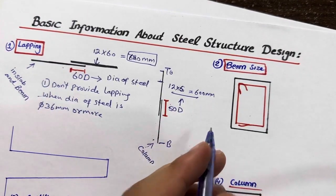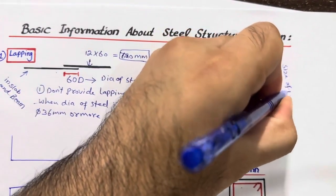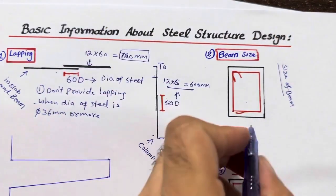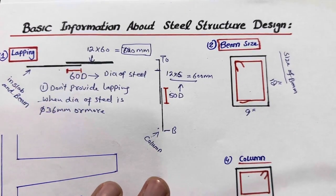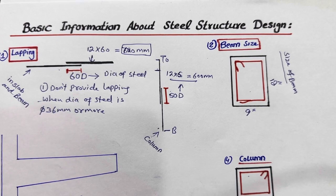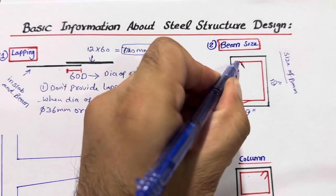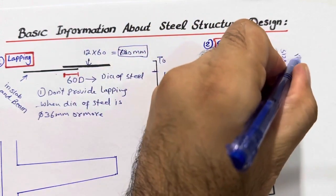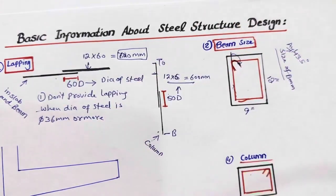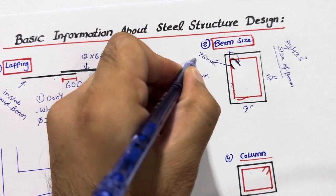The second topic is beam size. For a normal residential building of G+1 storey — ground floor and first floor — the minimum beam size should not be less than 9 inches by 12 inches. This is the minimum size for plinth beam or floor beam. Inside the beam, hooks are very important: they should be bent at 135 degrees, and the hook length should not be less than 75mm or 3 inches.